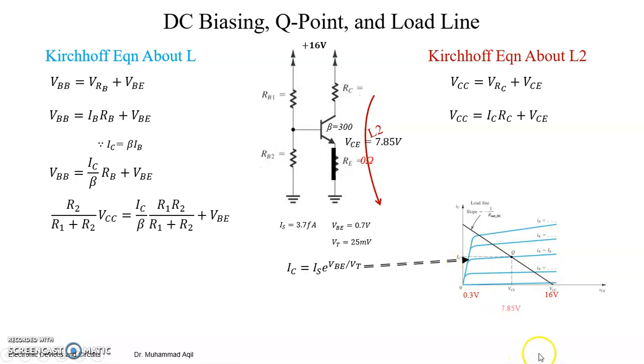And you are requiring what? Value of ICQ for this VCEQ. It means you are asking obviously on the same 0.7 curve, but VBE 0.7 curve but at this VCE, and there is no VCE information here, right?